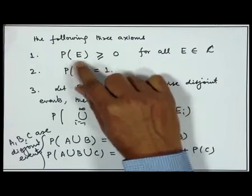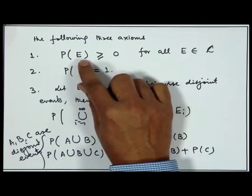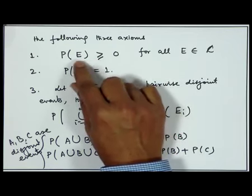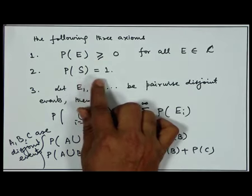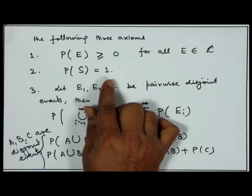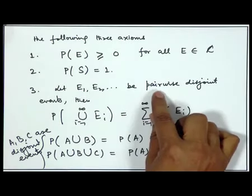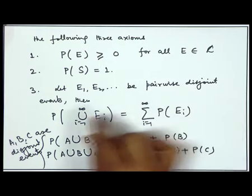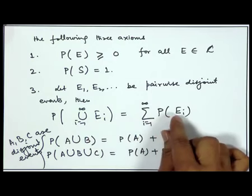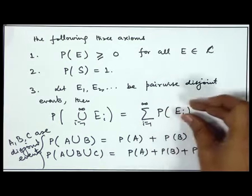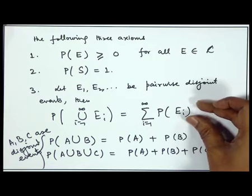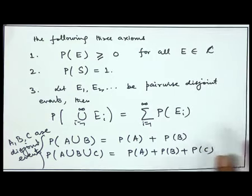According to the axiomatic definition, probability is a function defined on the event space. We say that probability of every event is always non-negative, probability of the full sample space is 1, and if we have a collection of pairwise disjoint events, then the probability of their union is equal to the sum of the probabilities — this is called the axiom of additivity. As a consequence, probability always lies between 0 and 1.